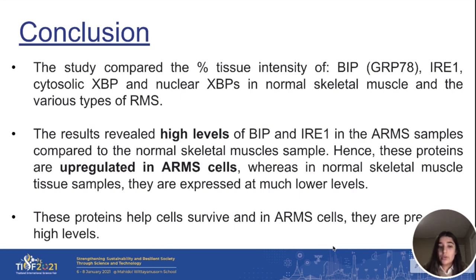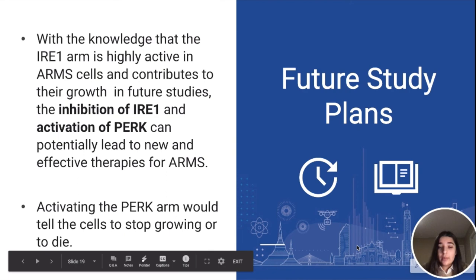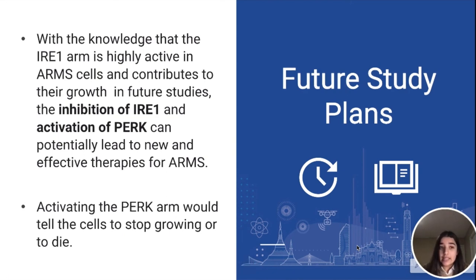This is very exciting knowledge for us because we are the first group in the world to have discovered this, and this knowledge can further help us in many ways. The future study plans involve using the knowledge that the IRE-1 arm is highly reactive in ARMS cells and contributes to growth. We can use this in future studies to inhibit the IRE-1 arm while activating the PERK arm, which could potentially lead to new and effective therapies for ARMS. By activating the PERK arm, we would essentially be telling cells to stop growing or to die. The combination of inhibition of IRE-1 and activation of PERK could yield new therapeutic strategies and options to help those suffering with ARMS.